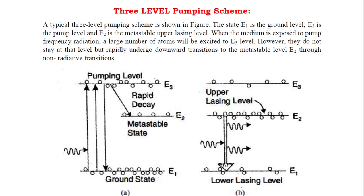Dear students, in this lecture we will study the three-level pumping scheme. A typical three-level pumping scheme is as shown in the figure. The state E1 is the ground state, E3 is the pumping level, and E2 is the metastable upper lasing level. When the medium is exposed to pump frequency radiation, a large number of atoms will be excited to the E3 level.